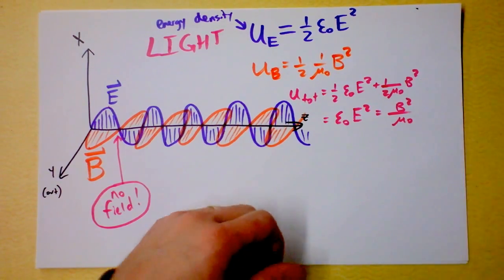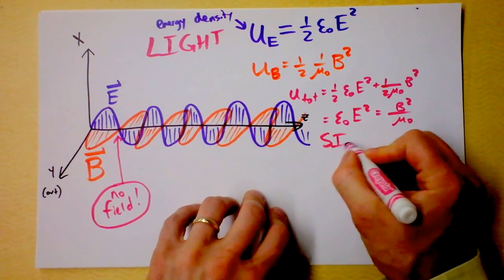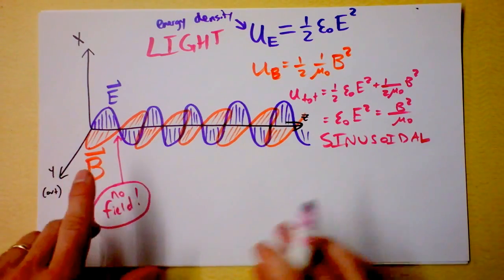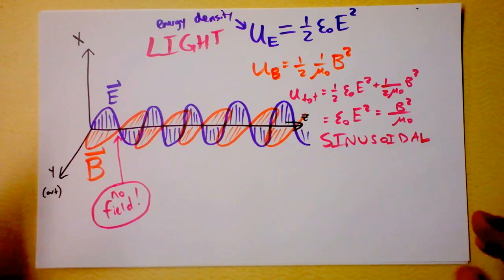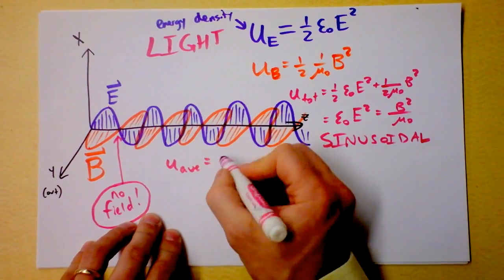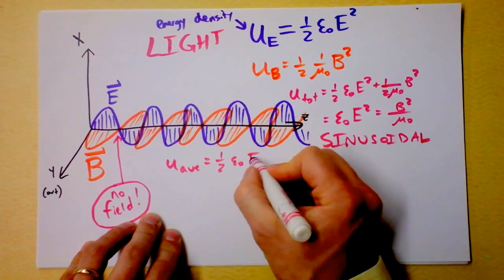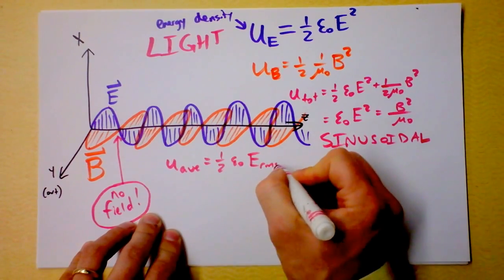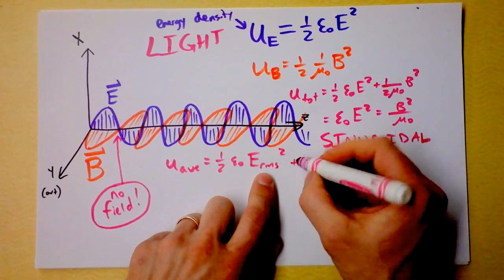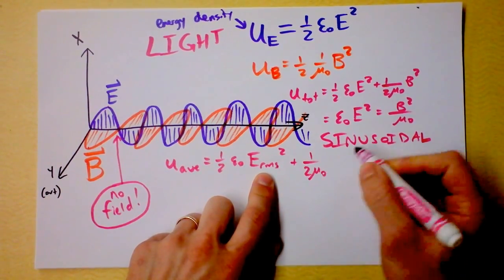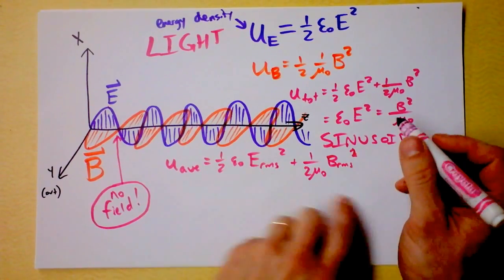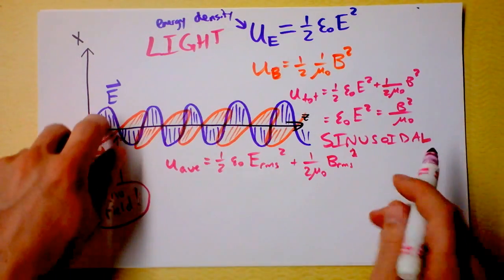These fields are sinusoidal. The problem is sometimes there's a lot of energy and sometimes there's no energy at all. Does that bother you? It bothers me. The average energy density though is ½ε₀E²ᵣₘₛ plus ½(B²ᵣₘₛ/μ₀). Aren't you glad we studied RMS recently?